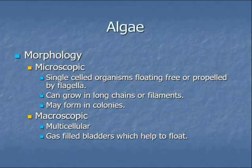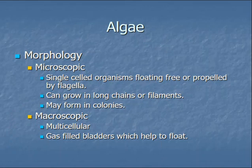Next is algae, which is a little different. Some algae are only visible by microscope — microscopic — and then there are those you can see macroscopically, so a very wide range in sizes. The microscopic ones can be single-celled organisms or grow in long chains and filaments, and may form colonies. The macroscopic ones are multi-cellular and are the ones you'll see floating on stale or stagnant pond water, with gas-filled bladders that help them float.